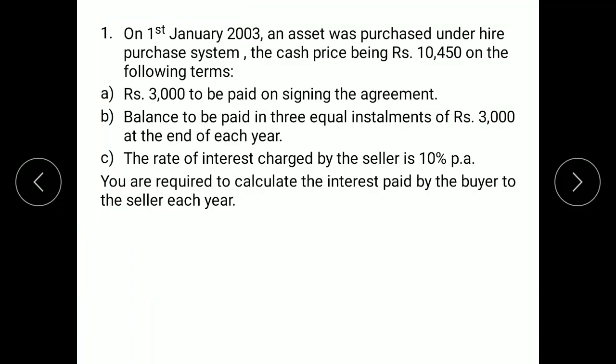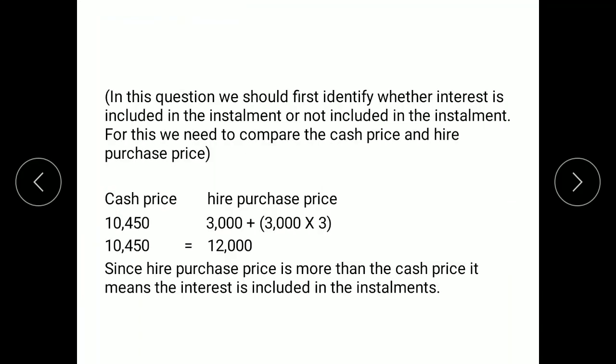To identify this we compare the cash price and the Hire Purchase price. Cash price given is 10,450. The Hire Purchase price is calculated by adding the advance amount of 3,000 plus total installment amount — three installments of rupees 3,000 each, which comes to 9,000 — so 9,000 plus 3,000 gives 12,000. Since cash price is less than the Hire Purchase price, it means interest is included in the installment amounts. So we will use the first method and prepare the Hire Purchase chart.